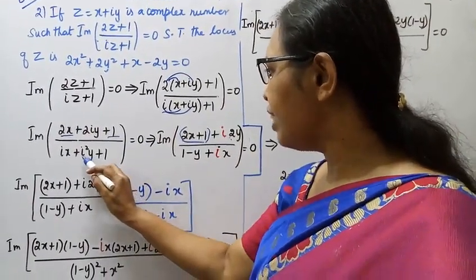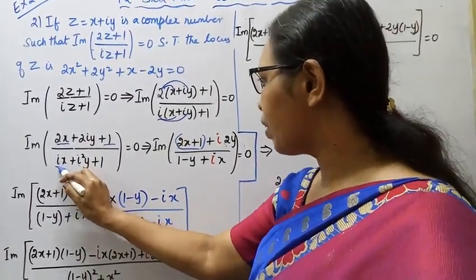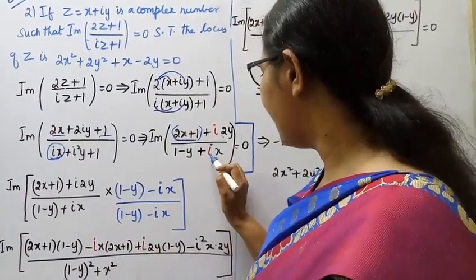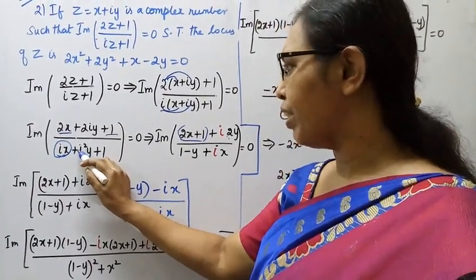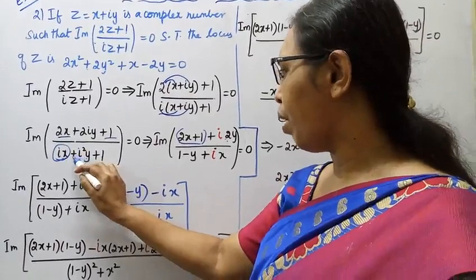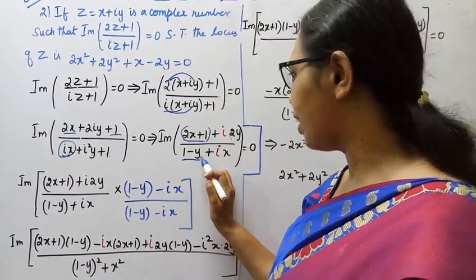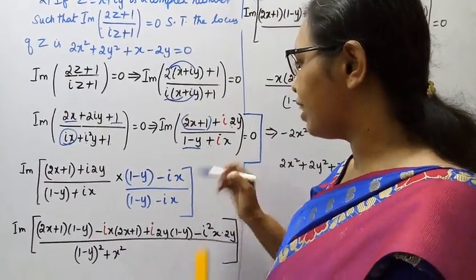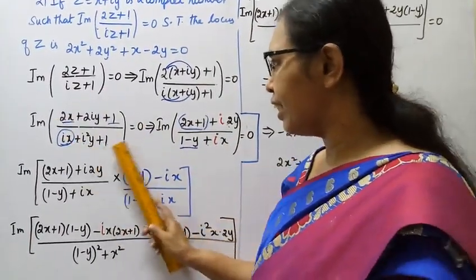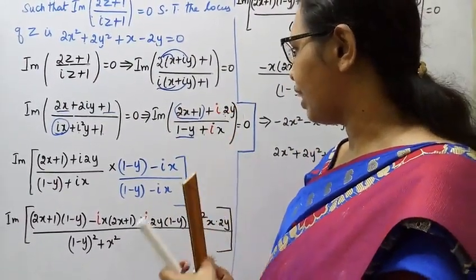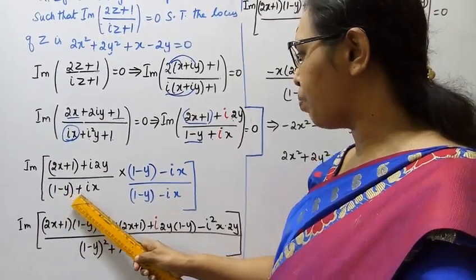The real part of the numerator is (2x plus 1), the imaginary part is i(2y). In the denominator, i squared equals minus 1, so minus y gives real part (1 minus y), and the imaginary part is ix. So we have (2x plus 1 plus i2y) divided by (1 minus y plus ix).